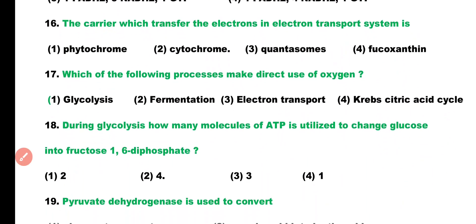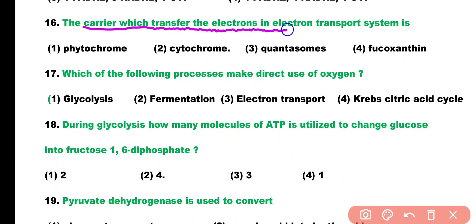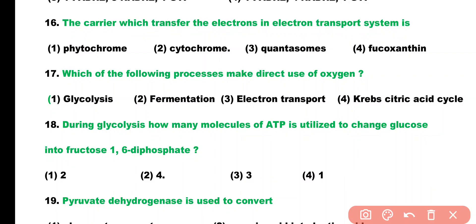Question number 16. The carrier which transfers electrons in the electron transport system is: phytochrome, cytochrome, quantosome, or fucoxanthin. Correct answer is option 2. Cytochrome is the carrier which transfers electrons in the electron transport system.